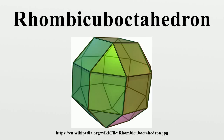Related polyhedra: The rhombic aboctahedron is one of a family of uniform polyhedra related to the cubical regular octahedron. This polyhedron is topologically related as part of a sequence of cantillated polyhedra, and continues as tilings of the hyperbolic plane. These vertex-transitive figures have reflectional symmetry.